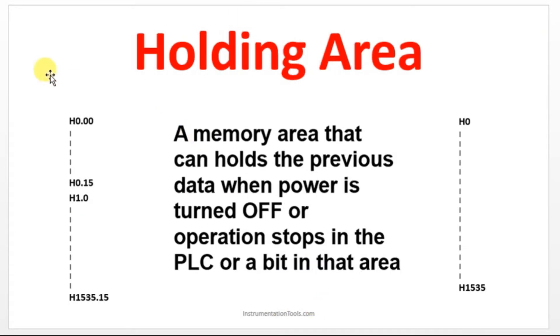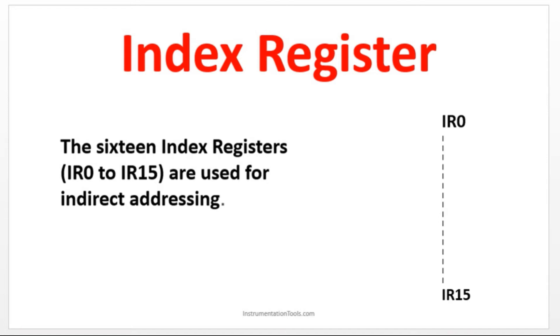Holding registers will be having the address starting with H. If the prefix is H, we can get to know there is a holding register address. This is for the index registers: IR0 to IR15. We have 16 index registers.